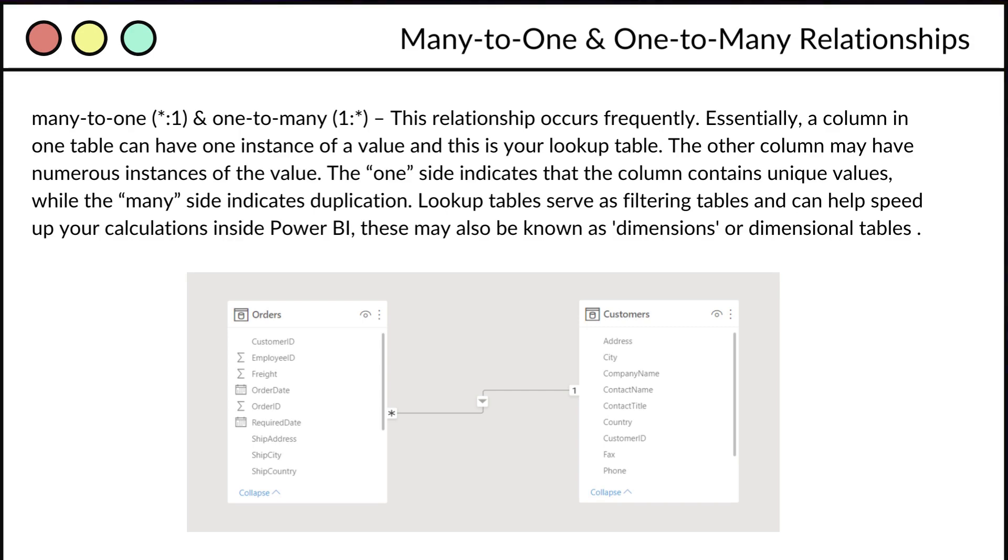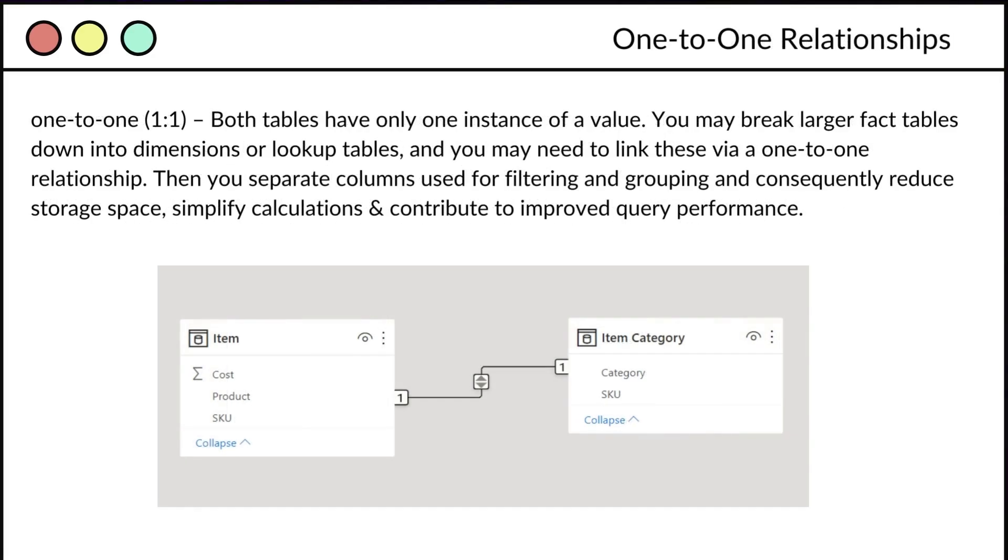So let's look at one-to-one relationships. Put simply, both tables that we're linking together via the relationship both have just one instance of a value. So we might choose to break larger fact tables, more granular data into dimensions or lookup tables like this item category or item. And we may need to link these via this type of relationship. So if we look at the example below, item and item category, they both have an SKU, which is a common ID for an item of inventory, a stock keeping unit.